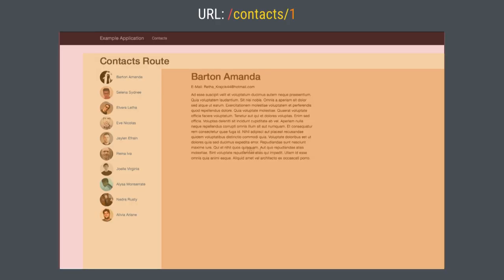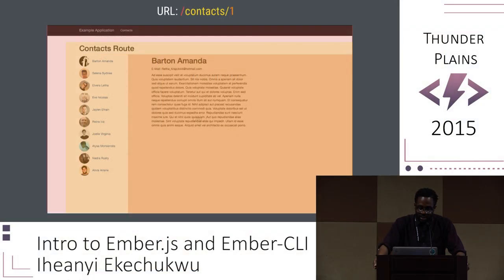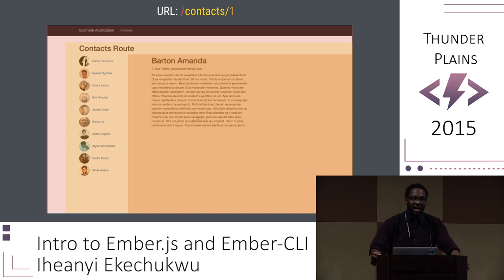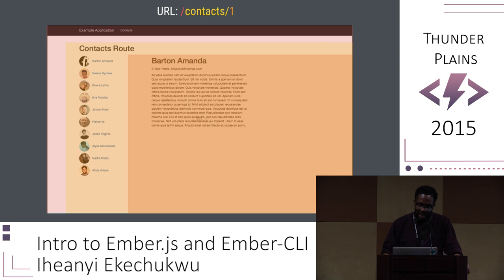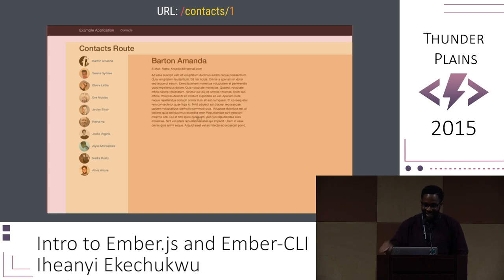At the top level in red, we have the application route, which all other routes are nested and rendered into. The contacts template is rendered into the application route's outlet. An outlet is a way in a template file to tell the route where to render its relevant template. When we navigate to a specific ID, it is rendered into that contacts route outlet — it's like outlet-within-outlet inception.